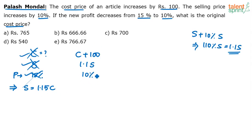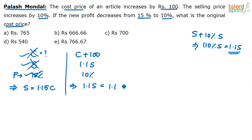If the profit is 10%, the new selling price 1.1S should be 110% of the new cost price. 110% means 1.1 times of the cost price, which is C plus 100. So 1.1S equals 1.1 times (C plus 100). The advantage of using 1.1 on both sides is that the 1.1 cancels, giving us S equals C plus 100.